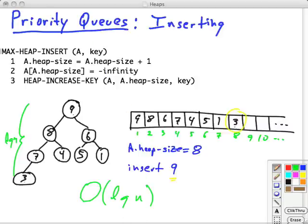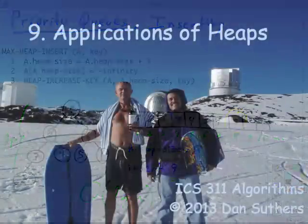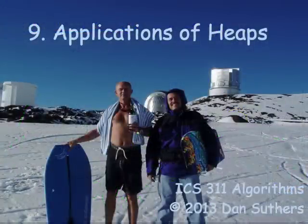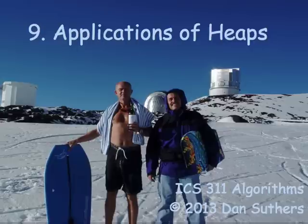So priority queues can be implemented with heaps with log n operations for most of the regular operations. Inserting them one at a time, each cost is log n, extracting them is log n. And this is a very common data structure. It's used quite a bit. It's a really good one to know. Well, I hope this review is leaving you feeling on top of applications of heaps.